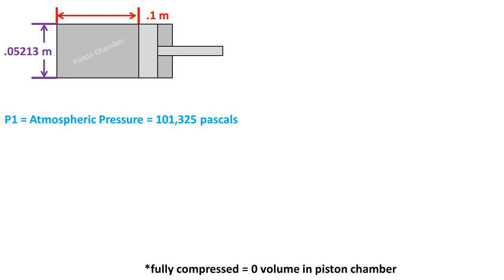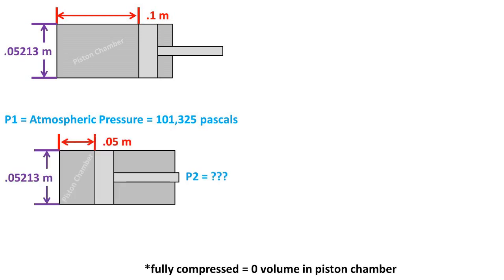In this problem, we have a piston chamber filled with air at atmospheric pressure of 101,325 pascals. The piston has a diameter of 0.05213 meters, and it has a distance of 0.1 meters before being fully compressed. The piston is then compressed to be only 0.05 meters from being fully compressed.